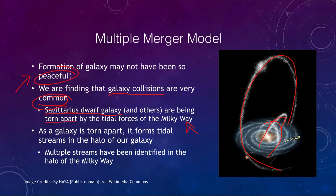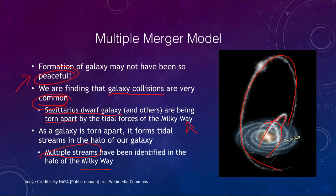What we find is that galaxies grow through collisions — what starts out as a very small galaxy can absorb other smaller galaxies and continue to grow in size, eventually becoming the galaxies we see today. We see evidence of this with multiple tidal streams in the halo of our Milky Way.